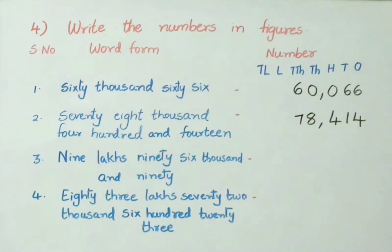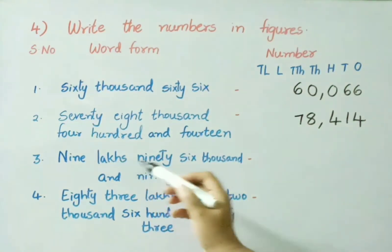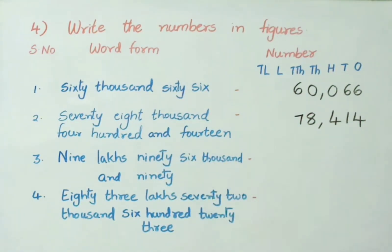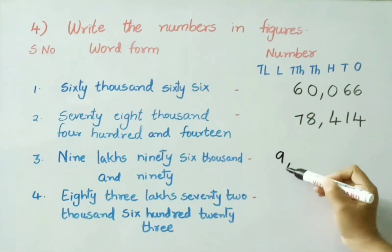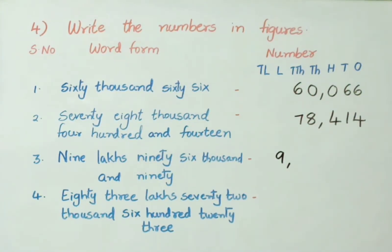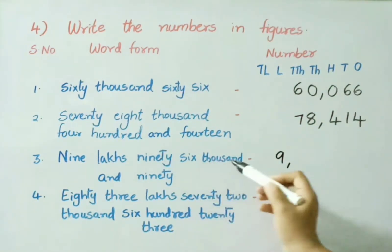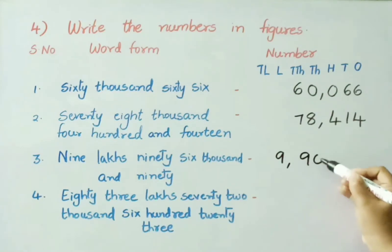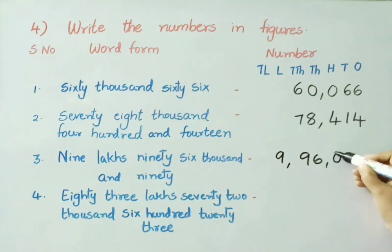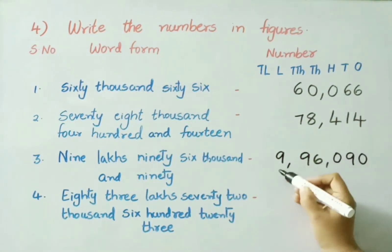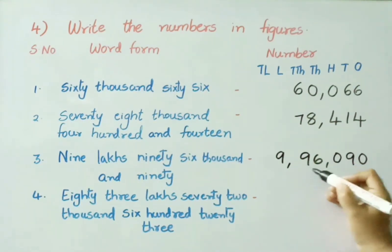See the third one: 9,96,090. Under the lakh's place, mention 9. Under 10,000's and 1000's place, mention 96. Next, 100's place has no value — mention 0. Then write down 90. So, the number is 9,96,090.